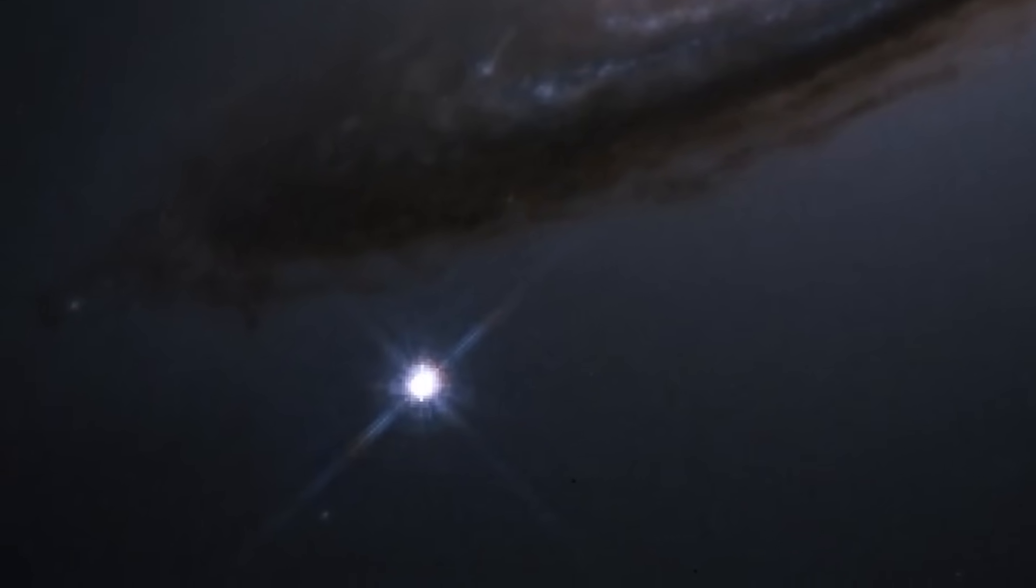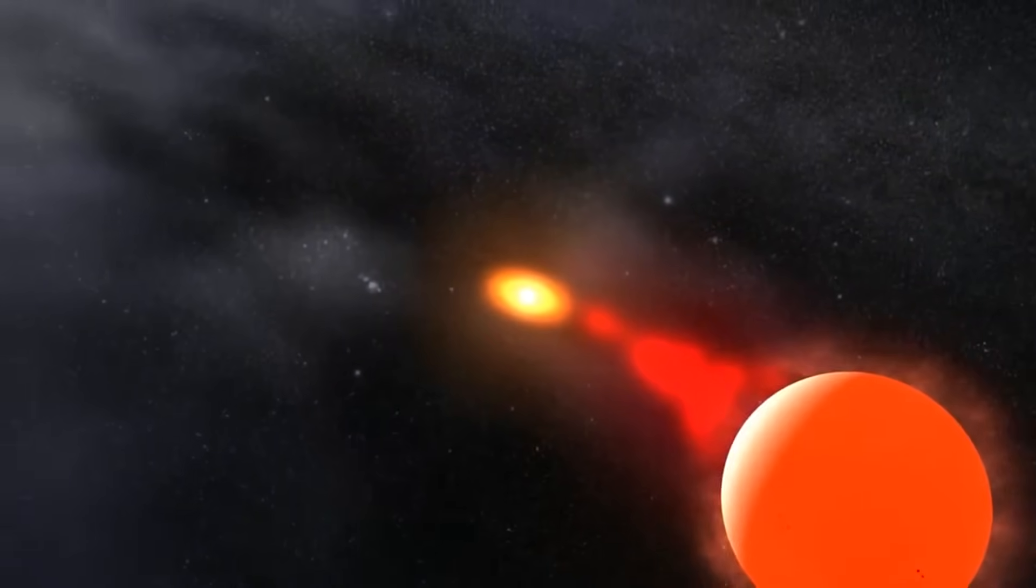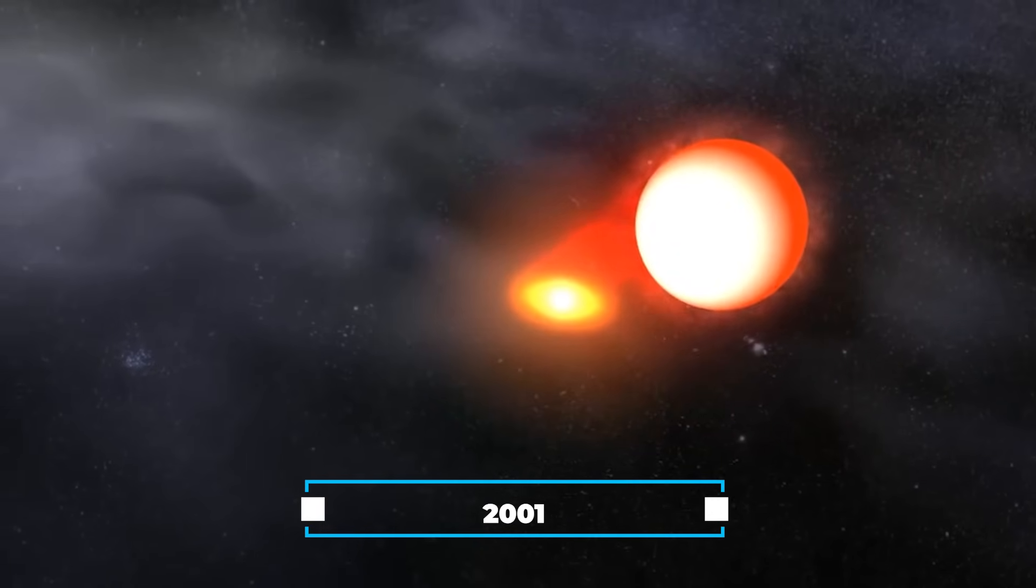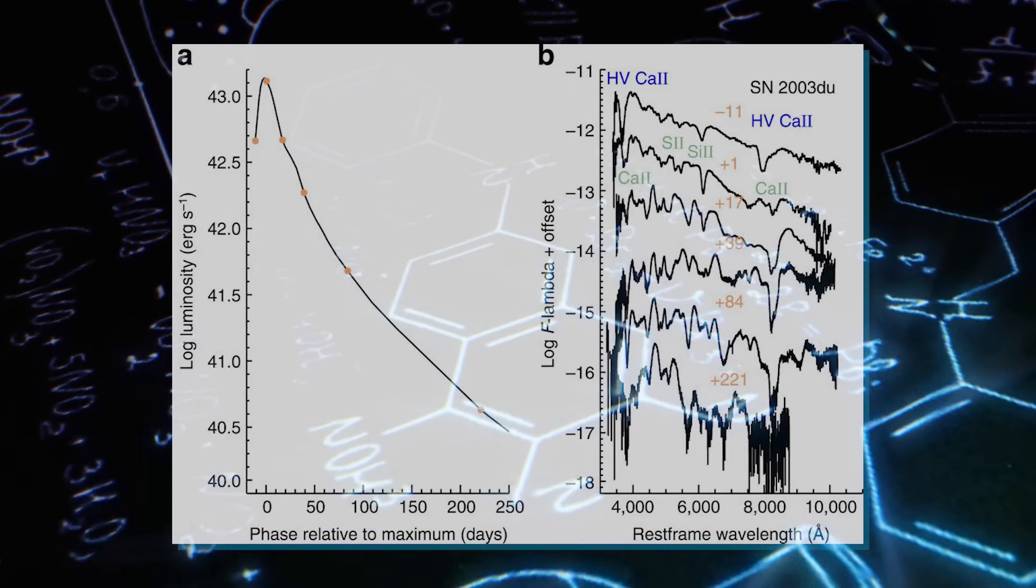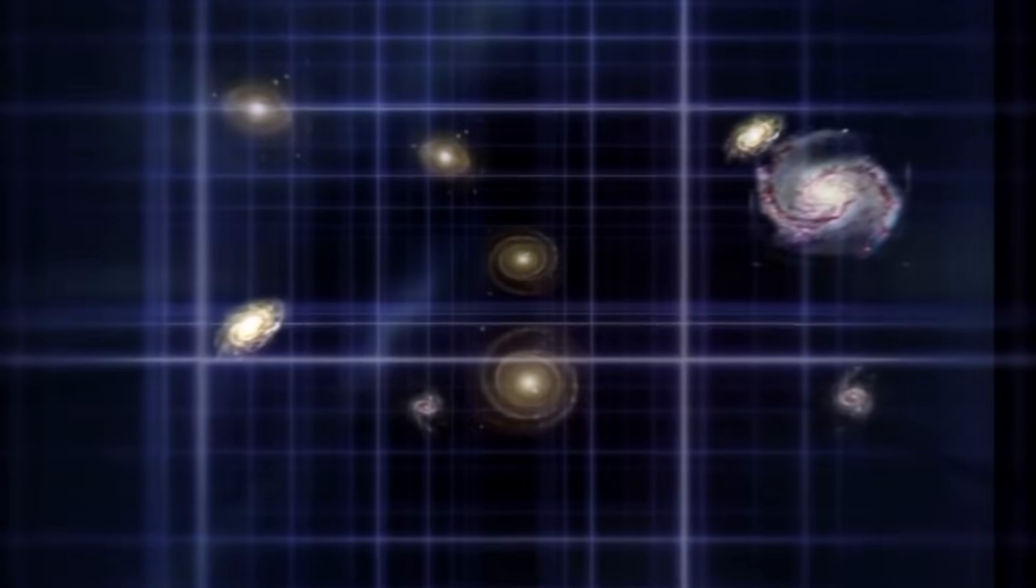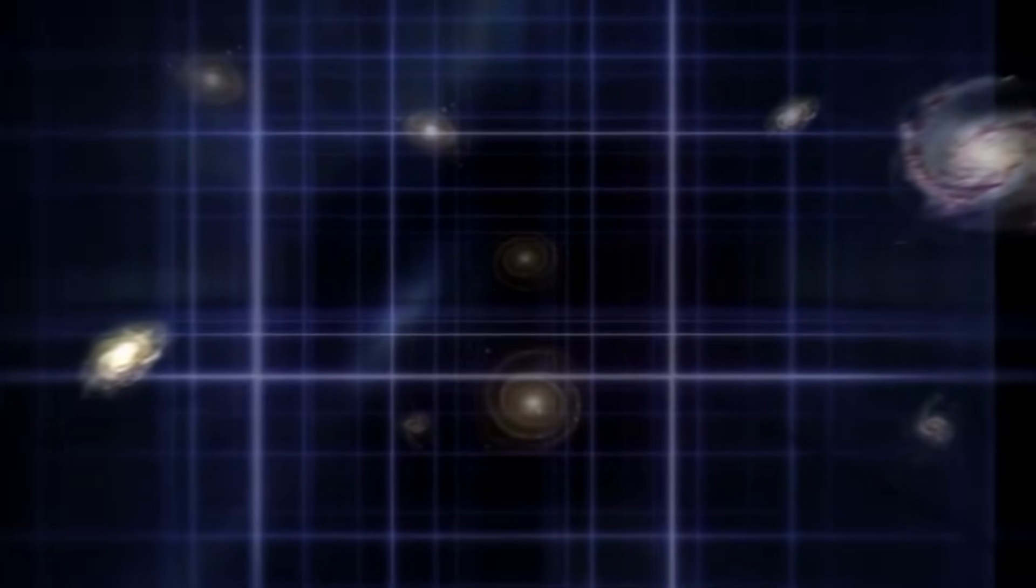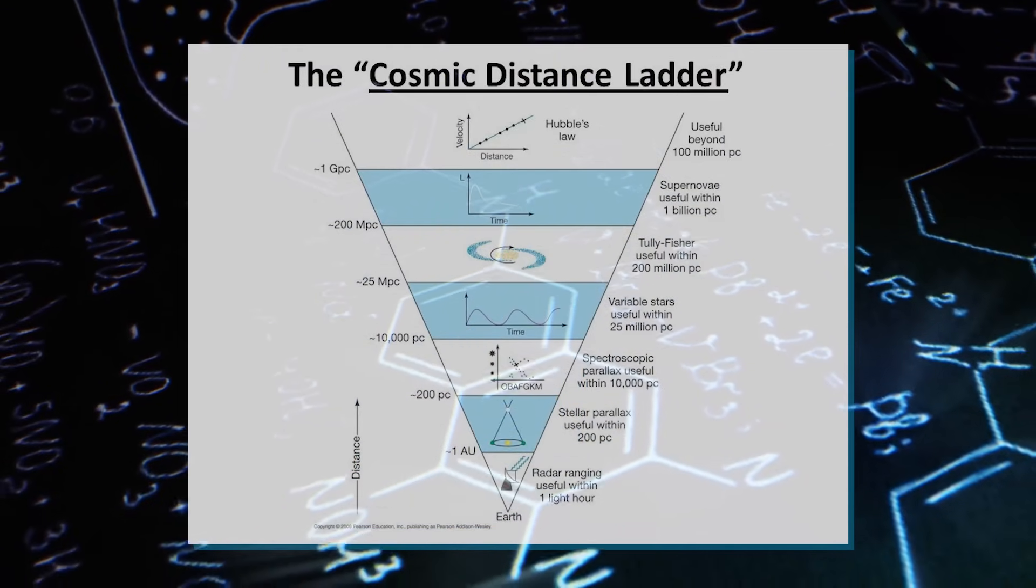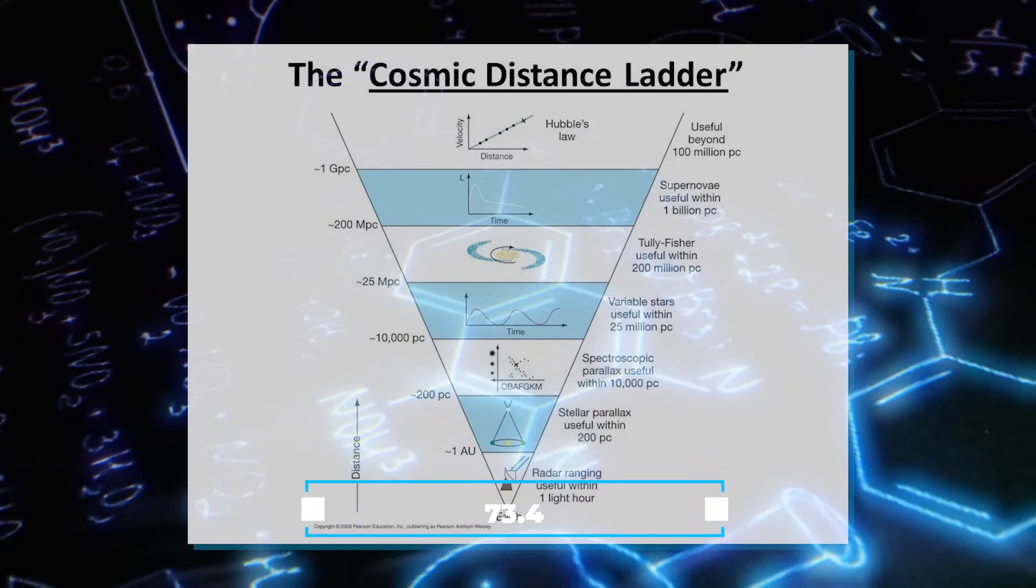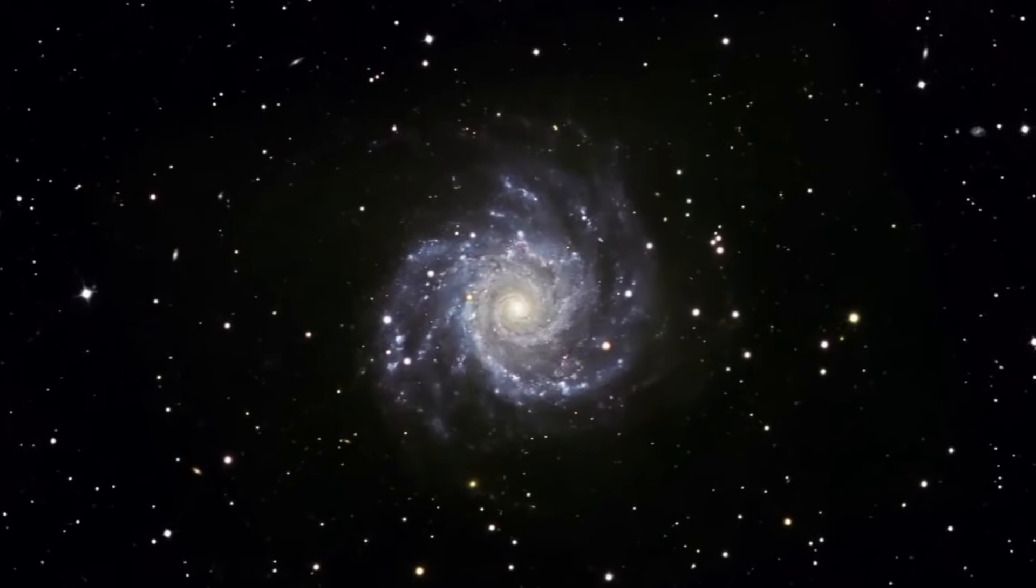Due to the extraordinary brightness of these supernovas, this approach enabled distance measurements up to a billion light years away. The first widely accepted measurement using this methodology was achieved in 2001, when the Hubble constant was determined to be 72, with a margin of error of approximately 8. Subsequently, over the past two decades, distance measurements have significantly improved in precision. In February 2022, the latest calculations using the distance ladder yielded a Hubble constant of 73.4, with a very narrow margin of error, indicating a more accurate and refined estimate.